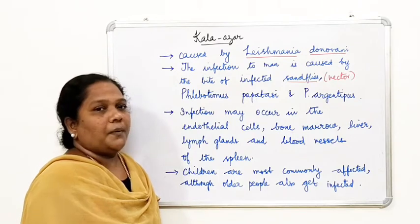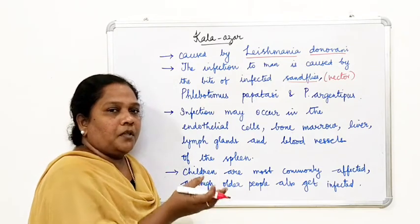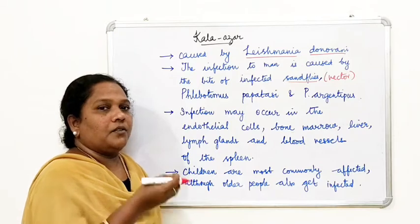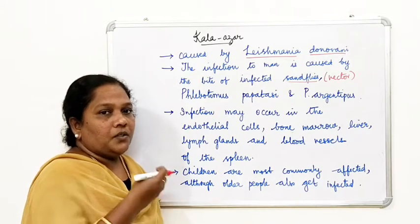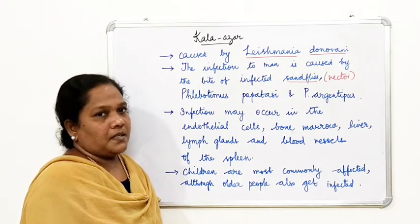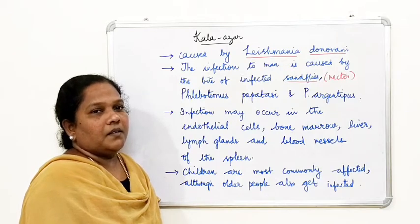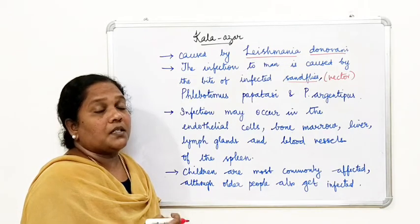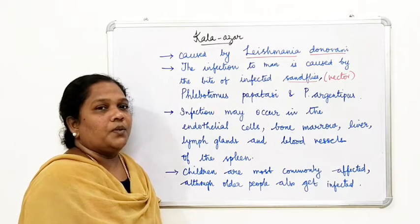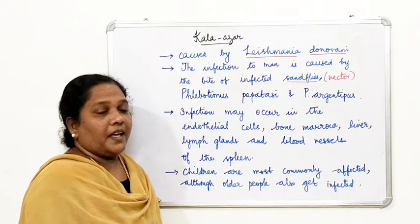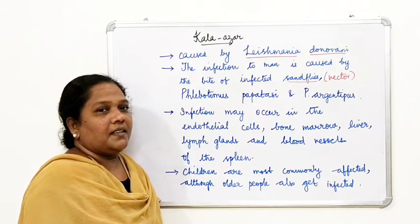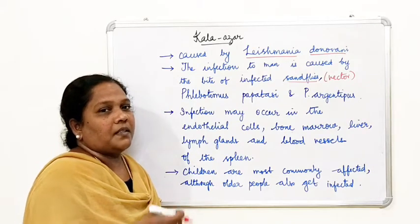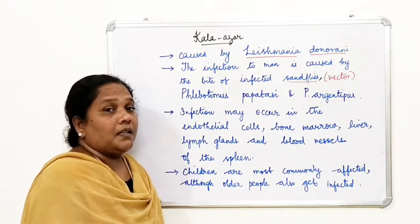When the sand fly infects an infected host, it takes the protozoan parasite from the host. The life cycle of Leishmania then continues within the gut of the sand fly, where asexual reproduction takes place. When this sand fly infects a normal person, the protozoan parasite enters that person.